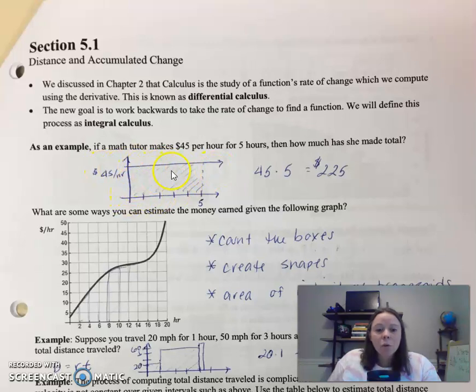Yeah, that was the total amount of money that person earned over from 0 to 5 hours was that $225. So we've been computing total change this whole time.